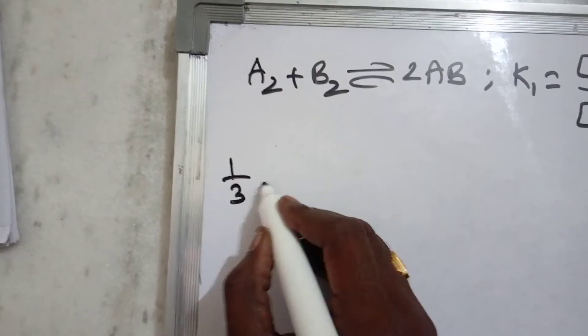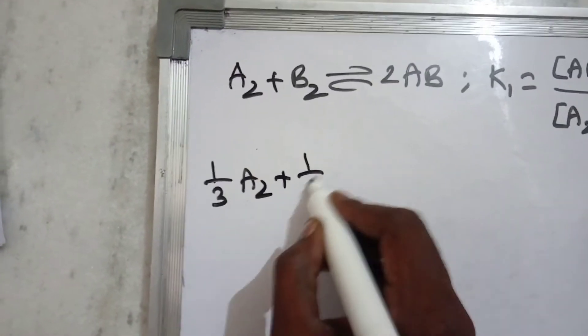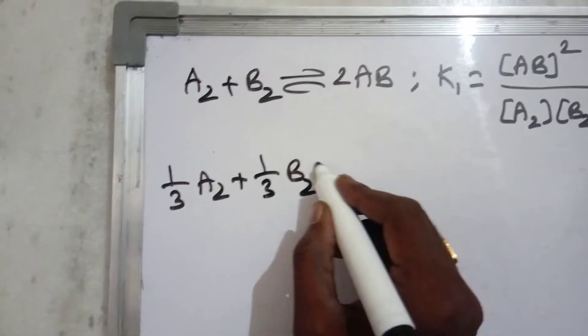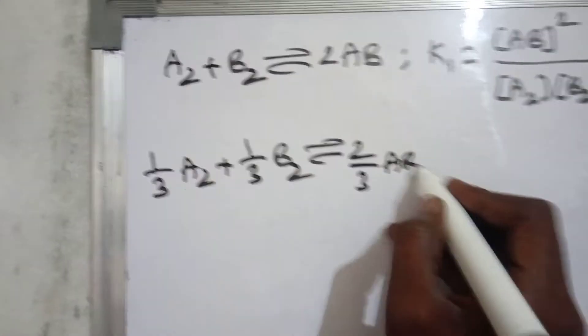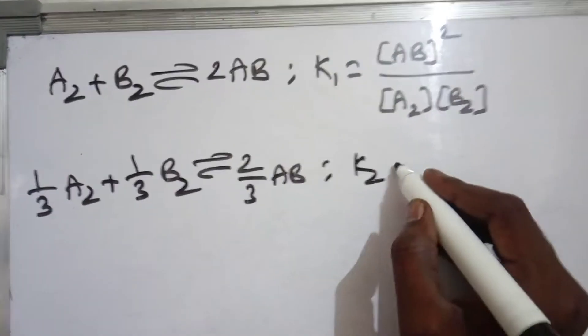Now for the second equation, one-third A2 plus one-third B2 equilibrium with two-thirds AB. This equation is called K2.